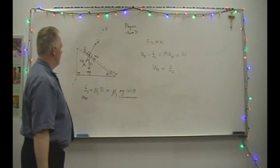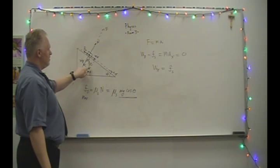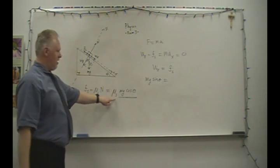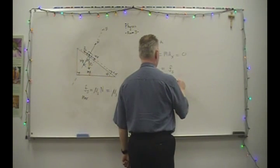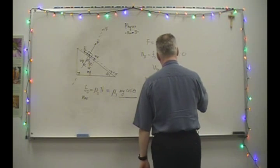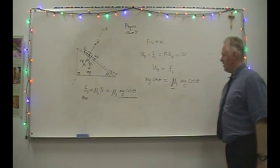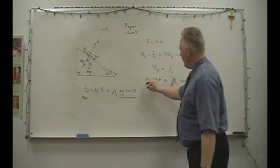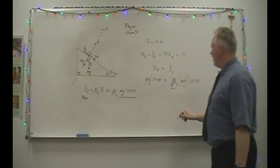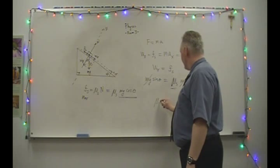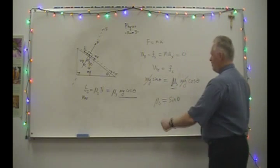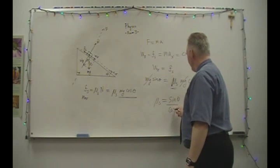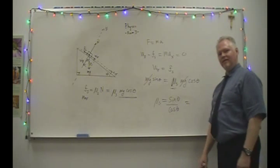Setting acceleration to zero means the x-component of weight equals the friction force. The x-component of weight is mg times sine of theta. And Fs we already figured out — it's mu_s times mg cosine theta. Now I want to solve for the coefficient of static friction. Notice that mg cancels from both sides. I move mu_s to one side and sine theta to the other, then divide both sides by cosine theta. Sine theta over cosine theta is the tangent of theta.